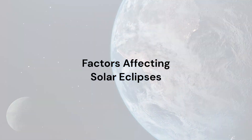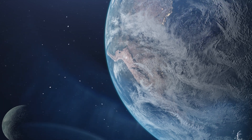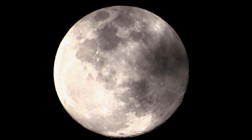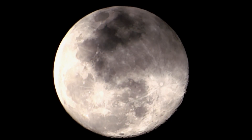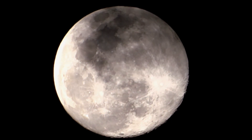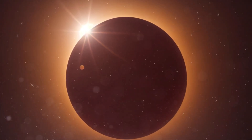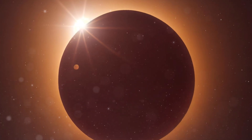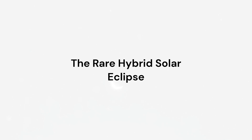Now, you might be wondering: if the moon orbits the earth every month, why don't we see a solar eclipse every month? That's because the moon's orbit is tilted about five degrees relative to the earth's orbit around the sun. Most of the time, the moon's shadow misses the earth entirely, or only grazes it, resulting in no eclipse or a partial one. So a perfect alignment of these celestial bodies is a rare event.